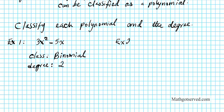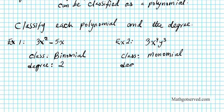Example 2: what if we had the polynomial 3x to the 4th times y to the 3rd? What kind of polynomial is this? This is just only one term, so it's a monomial. What is the degree? There's only one term, so we're going to look at the powers of the variables. You have two variables, so all you simply do is sum the powers. So 4 plus 3 equals 7. The degree of this monomial is 7.